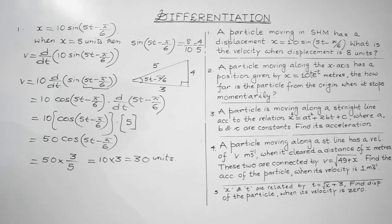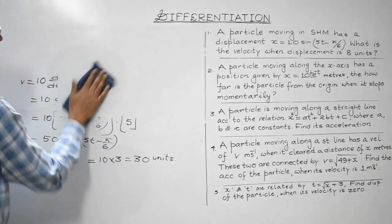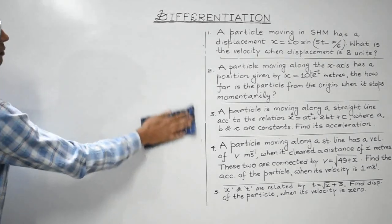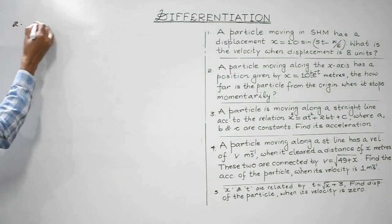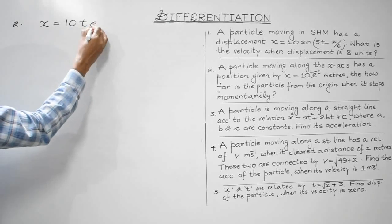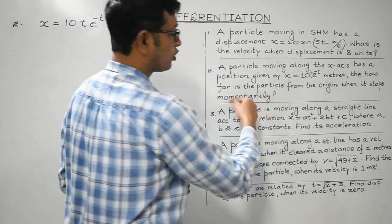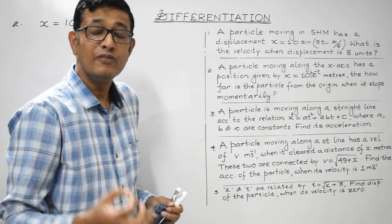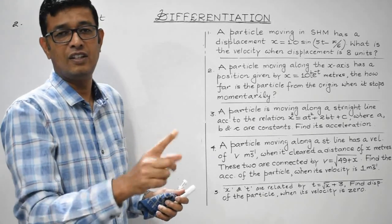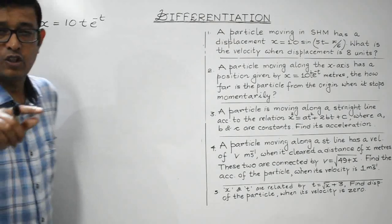Second question: a particle moving along the x-axis has position x = 10t · e^(−t), where x is in meters. How far is the particle from the origin when it stops momentarily? When the body stops, velocity = 0. So we need to find velocity, equate it to 0, solve for t, then find x.